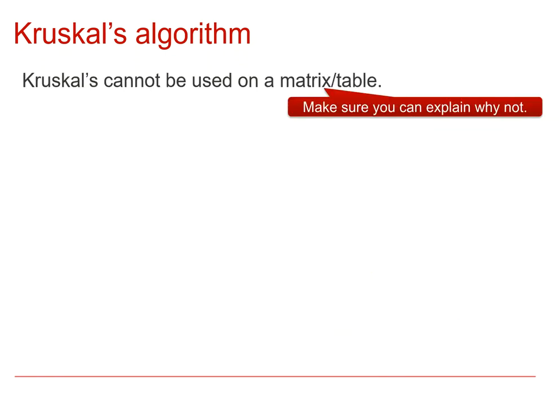So just a couple more things to say about Kruskal's algorithm. Firstly it essentially can't be used if you've got a matrix or a table. So you might want to have a little moment to think about why that would at the very least be very difficult. And of course the answer is that it's difficult to spot when you've made a cycle on a table.